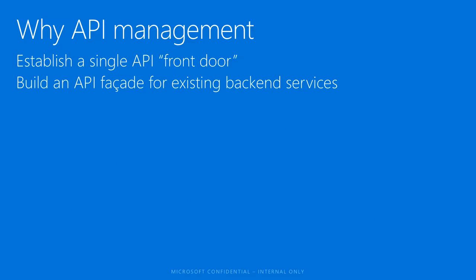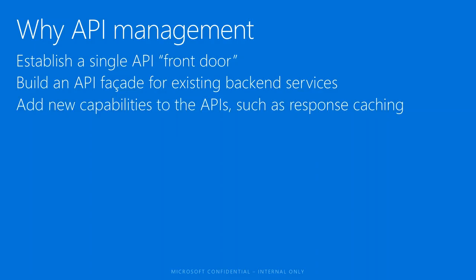Second, with API management you can build an API facade for your existing backend services. You can make all your backend services look as consistent as possible. The facade can also shrink the capability of your API — for example, if you have an API that can shut down a power grid, you can use the facade to only expose certain operations to partners or developers. You can also add new capabilities to your existing APIs without writing any code or changing your backend. For example, if your APIs are called millions of times a day, you can add response caching with a single click, reducing traffic to your backend and reducing latency.